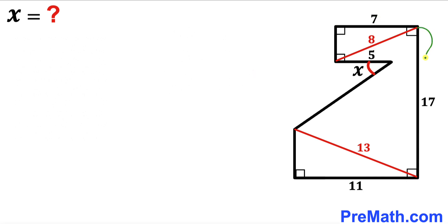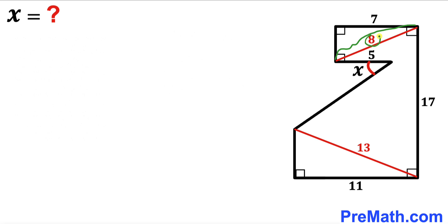Whereas the vertical side length of this shape is 17 units, and moreover these diagonal lengths are 8 units and 13 units. This angle is being represented by x, and our task is to calculate this angle x.